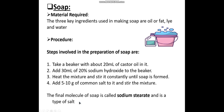Ab hamare paas ek activity hai ke kis tarah se soap ko prepare kiya ja sakta hai. Sabse pehle material required hai — teen main ingredients chahiye soap banane ke liye: oil ya fat, sodium hydroxide ya potassium hydroxide (alkali), aur water.